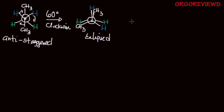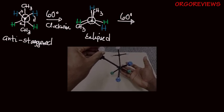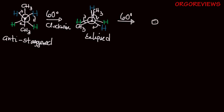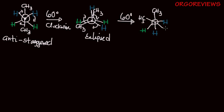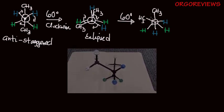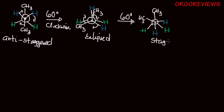If you do another 60-degree clockwise rotation, the methyl group moves, the hydrogens move — it's like a steering wheel. You draw your conformation: the methyl group is here, the blue hydrogens move down and to the side. The back groups stay fixed with the CH3 and green hydrogens pointing down. This is going to be a staggered conformation, but because the methyl groups — the larger groups — are closer to each other, we call this a gauche staggered conformation.